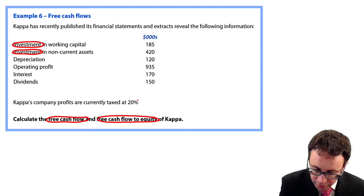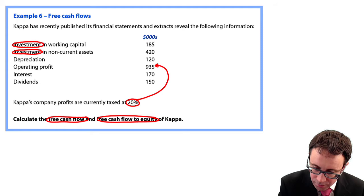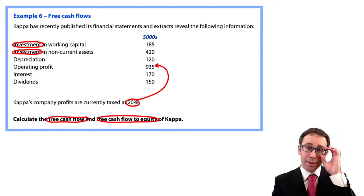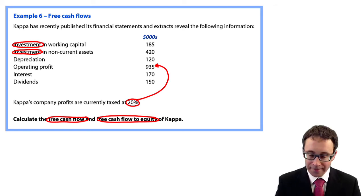However, just note the company's profits are taxed at 20%, so when we're looking at your tax payments, we will just take 20% of the operating profit there at 935. So let's have a play around with it, see how we get on.